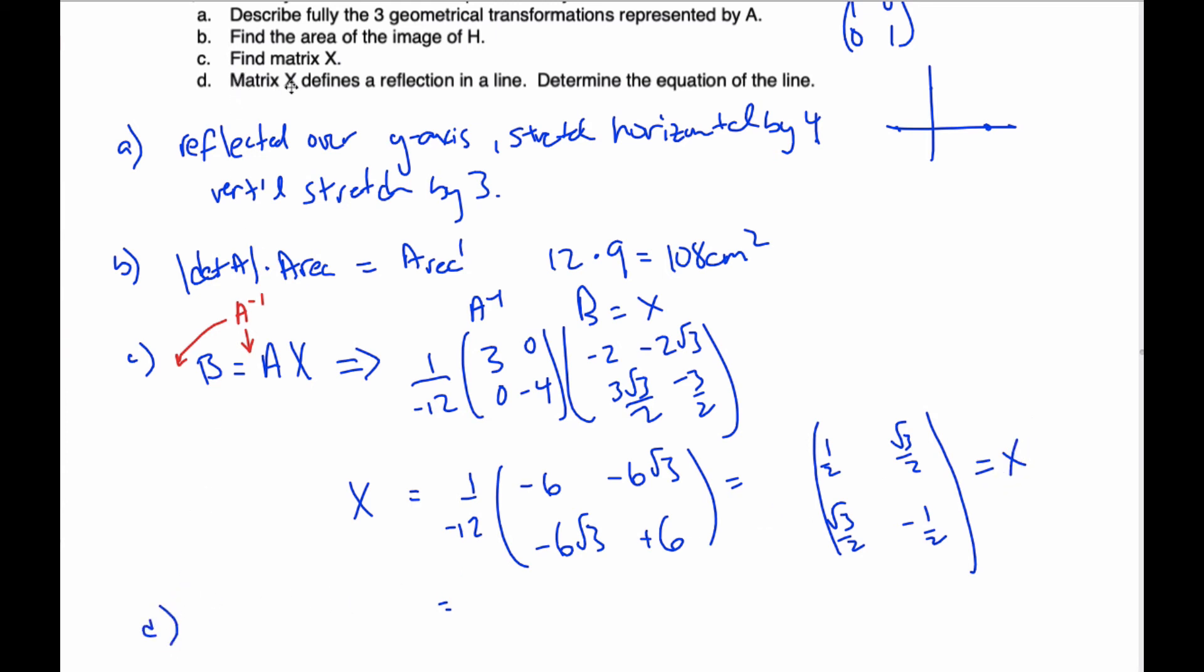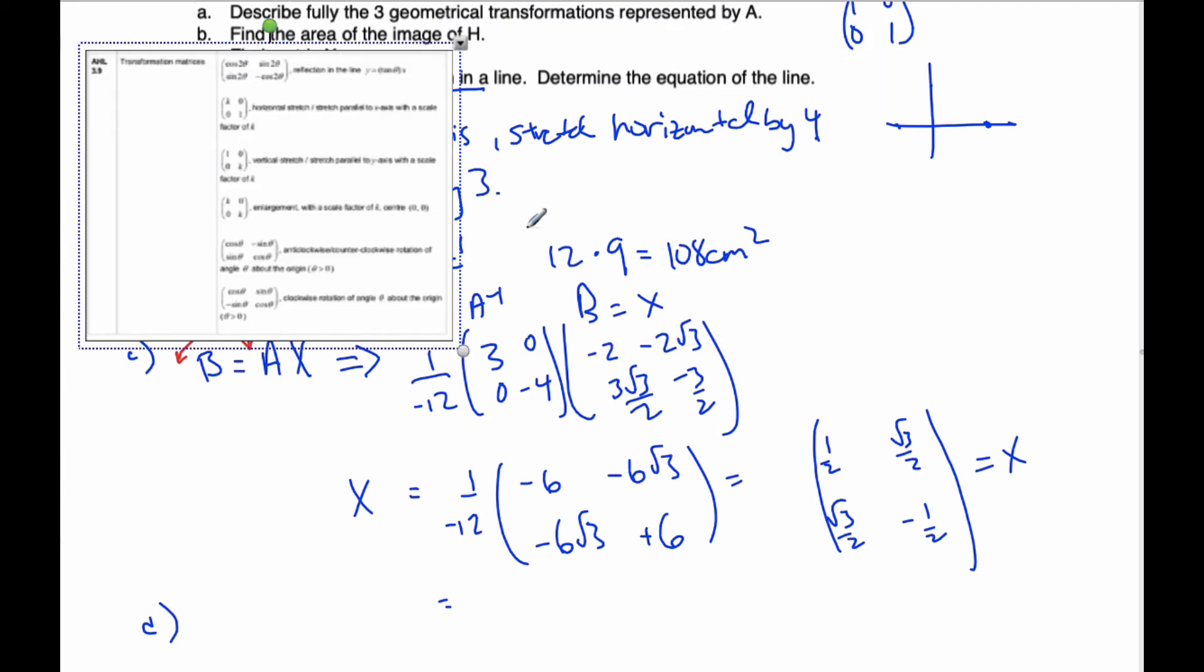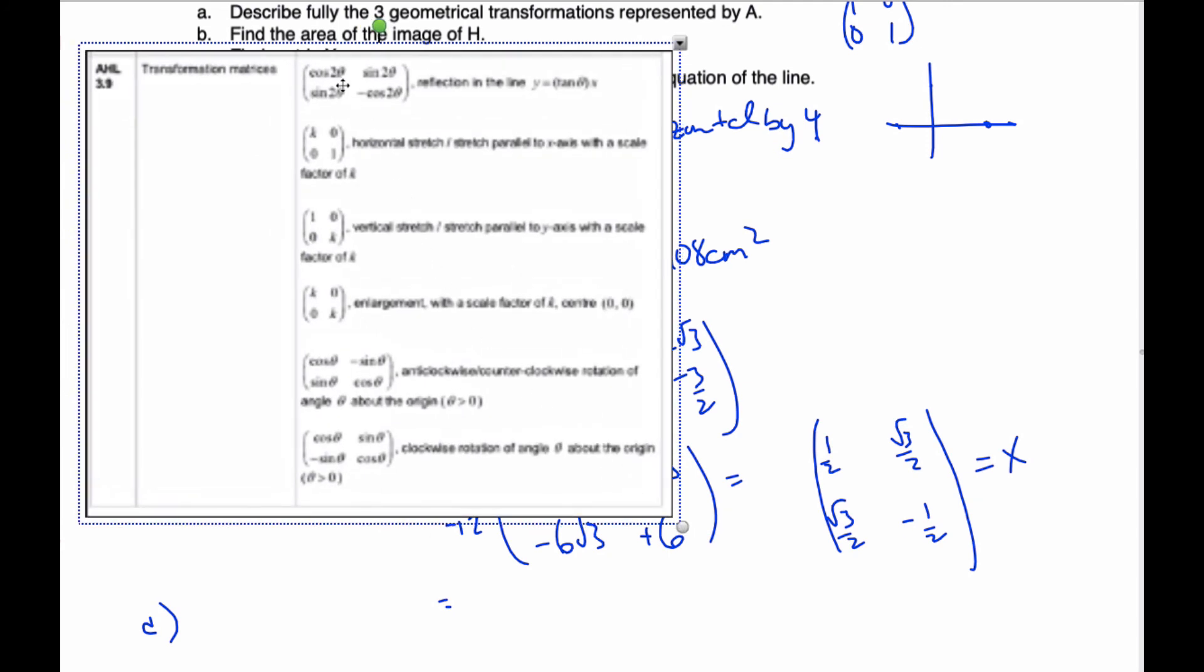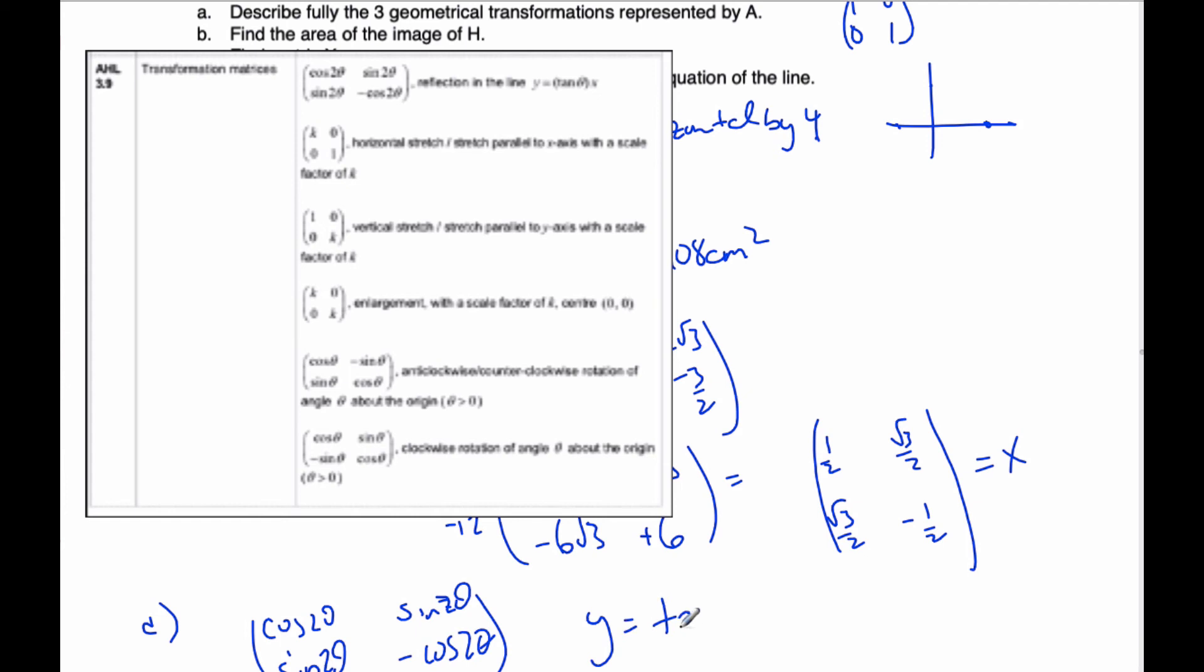Now, part D says the matrix X is defined by reflection in a line. Well, if it's defined by a reflection in a line, then here are some transformations that I can recall. And so here's the reflection in a line, and it's hard to see from the pixels, but I know what it says. Reflection is cosine 2θ, sine 2θ, sine 2θ, minus cosine 2θ. θ is the matrix for the line Y equals tangent θ X.